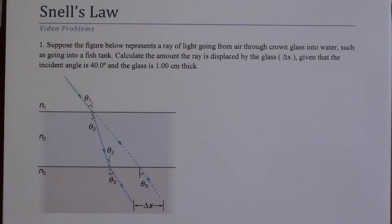The first question says we have a ray of light traveling from air through crown glass into water, kind of like what you would have in a fish tank. Calculate the amount the ray is displaced by the glass, given an incident angle and a thickness.